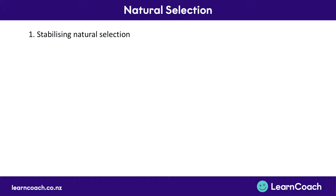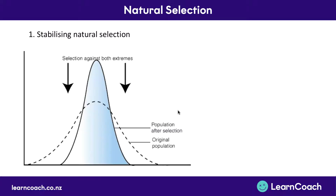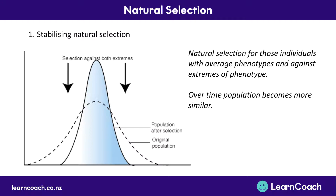The first type is stabilizing natural selection. If we have a population — shown by the black dotted line — with natural variation, say in human height: some people are shorter, a lot are in the middle, and some are taller. But if the environment is best suited to people of average height, the taller and shorter individuals die off, favouring the average. We call this selecting against both extremes, so the population becomes much more clustered around the middle over time.